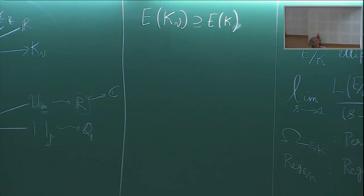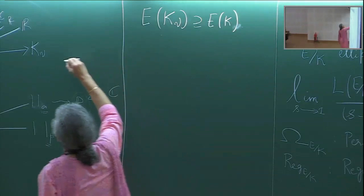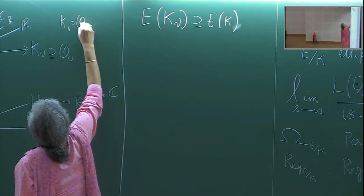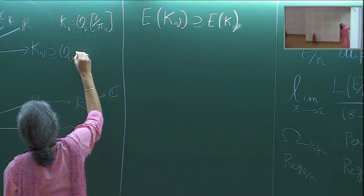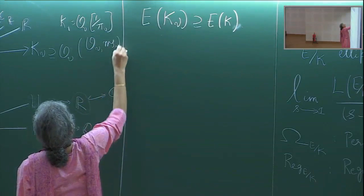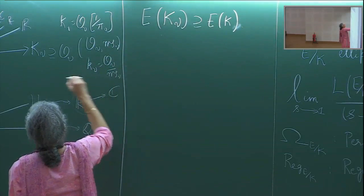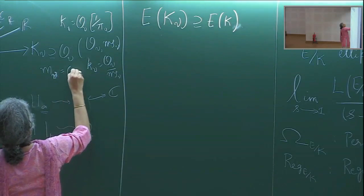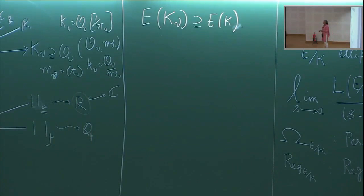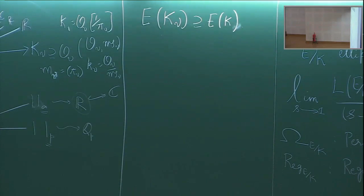Over a local field, every elliptic curve can, with a suitable change of coordinates, be brought to a minimal Weierstrass equation — one where the discriminant Δ has minimal v-adic valuation. This is a deep theorem. There is a discrete valuation v: K_v → Z ∪ {∞} satisfying v(π_v) = 1, v(0) = ∞, v(x) ≥ 0 for x ∈ O_v, and v(ab) = v(a) + v(b). We arrange that v(Δ) is minimized by suitable change of variables.